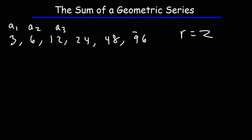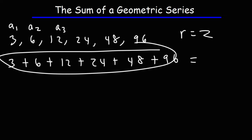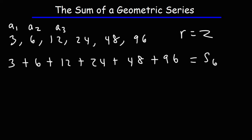Now what we have here is a sequence. To convert it into a series, we need to use the addition sign. So this is a geometric series. Let's add up the first six terms: s6, the partial sum of the first six terms. 3 plus 6 plus 12 plus 24 plus 48 plus 96 equals 189.